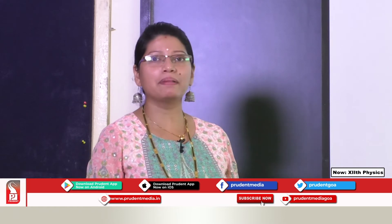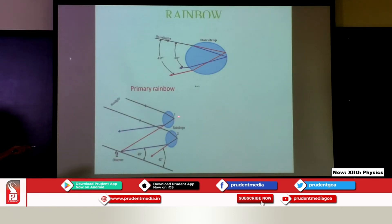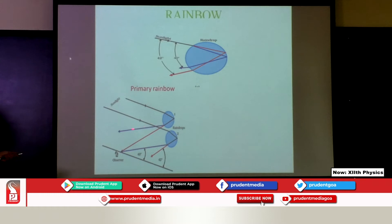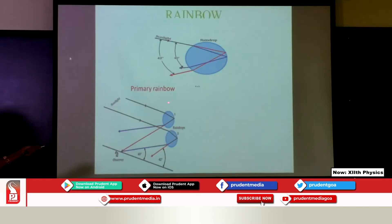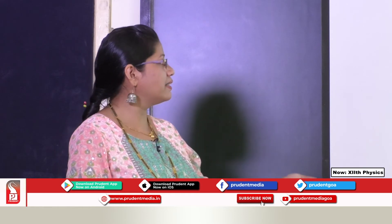We have two types: primary and secondary rainbow. In the primary rainbow, the ray is incident, suffers refraction, total internal reflection, and then splitting of colors — violet and red. The observer sees red on top and violet below. It is a combined effect of refraction, total internal reflection, and refraction again.